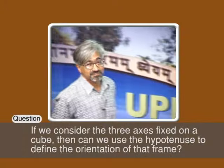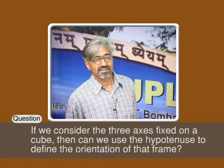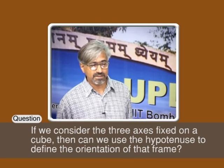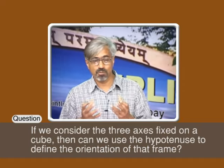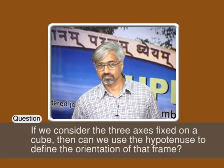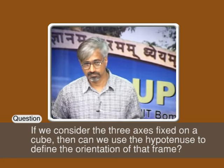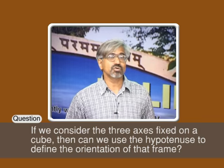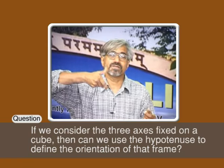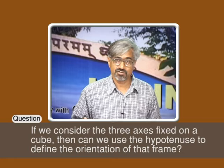Is everyone convinced about that? A student asks: if I consider the first vector as a hypotenuse of a cube, can that hypotenuse define the orientation? The answer is: it is being used for orientation, but that is only one of the axes. Knowing just one vector is not sufficient because you can rotate the object about that same vector and it will not change — so one vector alone does not uniquely define the orientation.